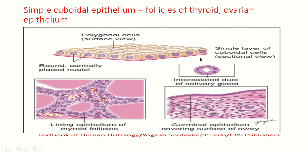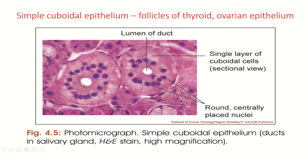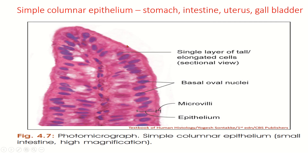Simple cuboidal epithelium — on the cut section, the cells appear cuboidal in shape. You can see the intercalated duct of the salivary gland lined by cuboidal epithelium. You can see the thyroid follicle lined by cuboidal epithelium, as well as follicles of the thyroid and the ovary epithelium. Here you can see a single layer of cuboidal cells.